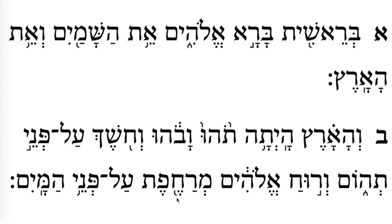And this is a tipcha, which says 'tipcha.' So this is 'merachefet.' And this is mercha and sof pasuk. So this is 'al-penei ha-mayim.' From here to here is the end of another clause. Let's do the whole thing together now: Bereshit bara Elohim, et ha-shamayim ve-et ha-aretz, ve-ha-aretz ha-yet-ah tohu va-vohu, ve-choshech al-penei tehom.